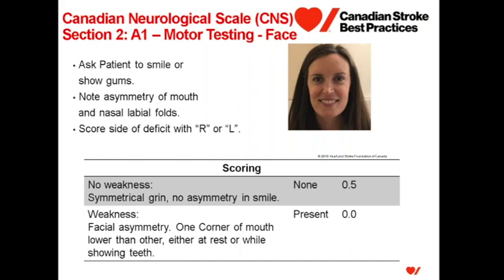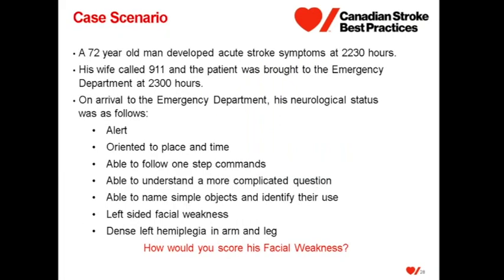Versus facial weakness present: one corner of the mouth may be lower than the other either at rest or while showing teeth, with asymmetry of the face. Here the patient would receive a score of 0. We indicate whether the weakness is on the right with an R, or on the left with an L. Going back to our case scenario, he would be scored as facial weakness present, receive a score of 0, and we would indicate L because the weakness is on the left.